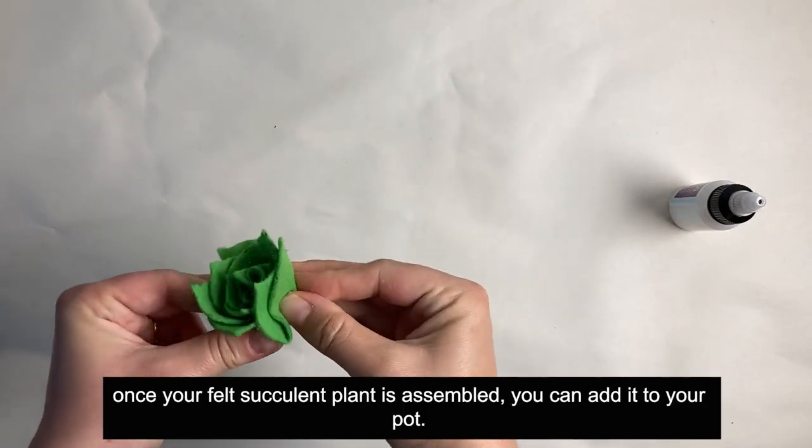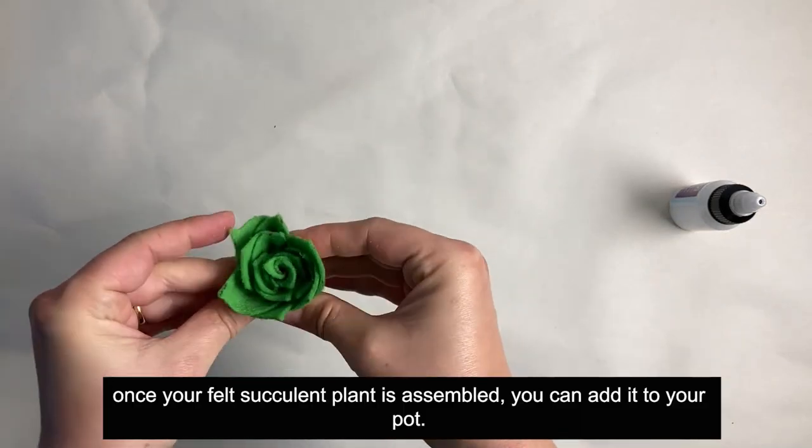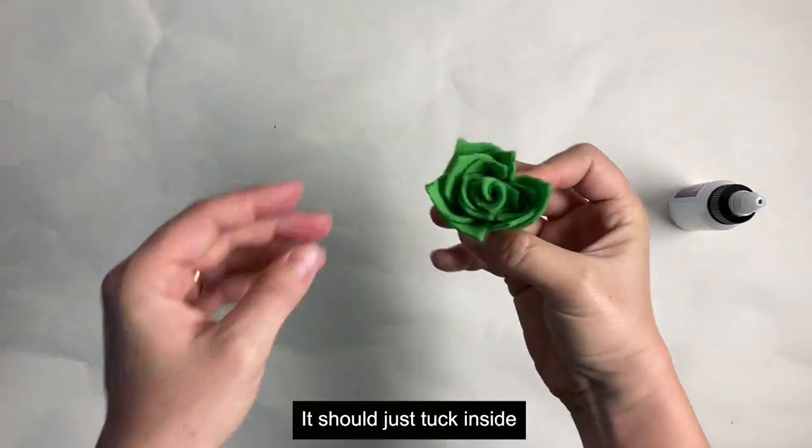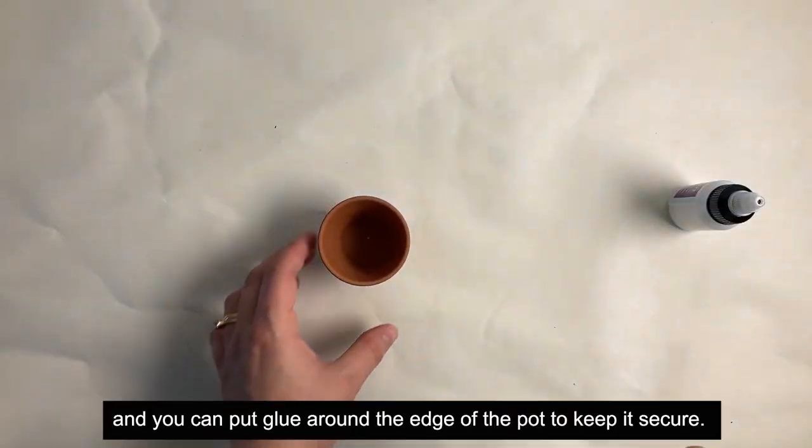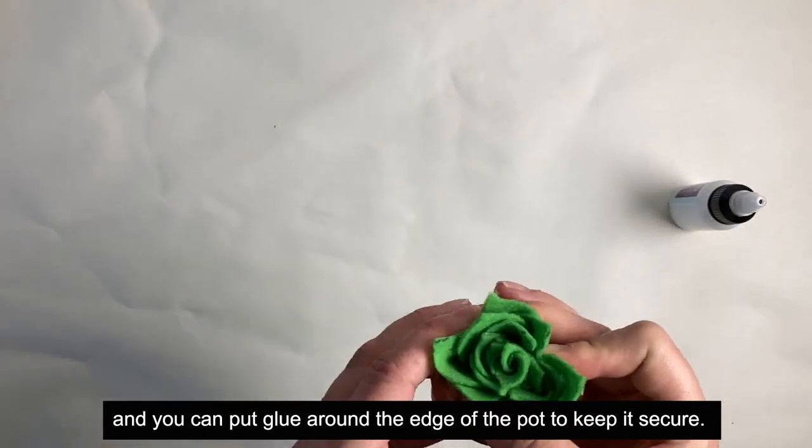Once your felt succulent plant is assembled, you can add it to your pot. It should just tuck inside, and you can put glue around the edge of the pot to keep it secure.